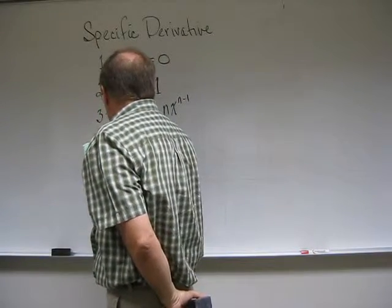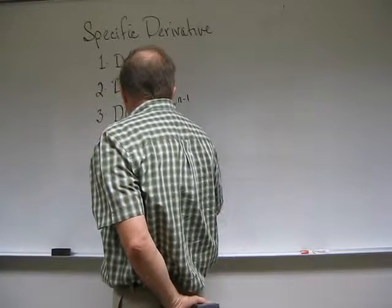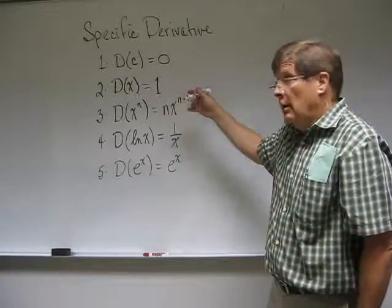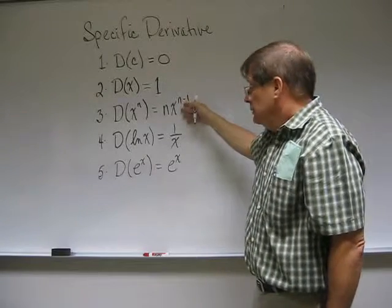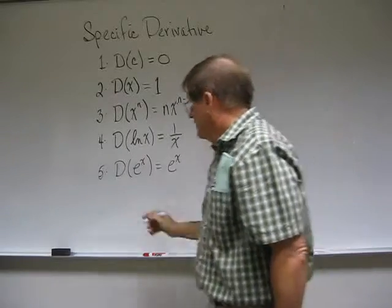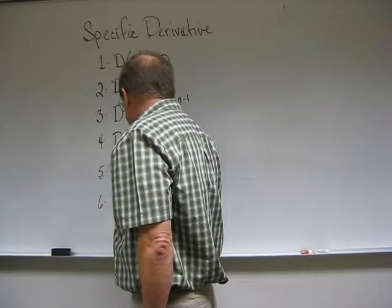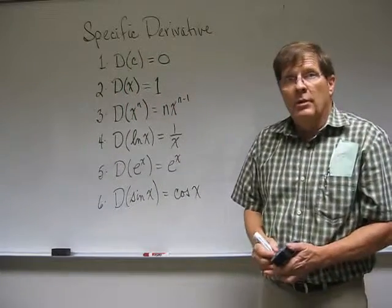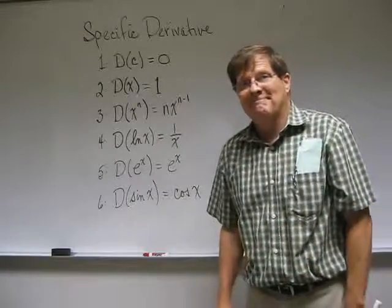The fifth rule: the derivative of e to the x just happens to be e to the x. Your job will be to memorize these six rules. They're not going to be hard. These two rules are very obvious because you know what the graphs are. This one gets a little bit more complicated, kind of an interesting one. These two will be easier to memorize. And finally the sixth one is the derivative of the sine of x happens to be the cosine of x. Remember, the derivative tells the slope of the curve at the point. We'll use that over and over again. Thanks.